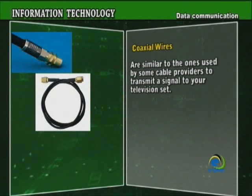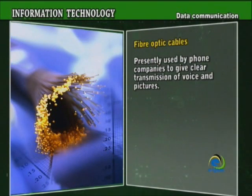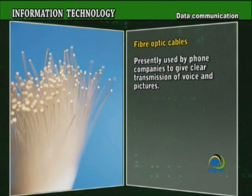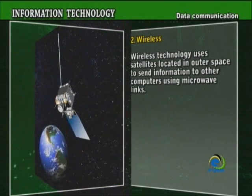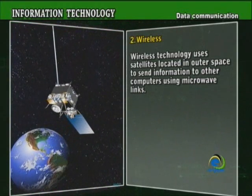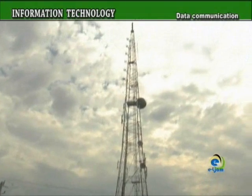The wires may be coaxial cables or fiber-optic cables. Coaxial cables are similar to the ones used by some cable providers to transmit a signal to your television set. 2. Fiber-optic cables are presently used by phone companies to give clear transmission of voice and pictures. Companies like Flow are currently replacing coaxial cables with fiber-optic cables, which offer superior speed and quality. Wireless technology uses satellites located in outer space to send information to other computers using microwave links. This mode of data transmission is used by cell phone companies to send or receive data, which is relayed by strategically located transmission towers.